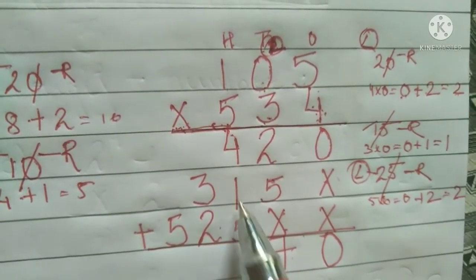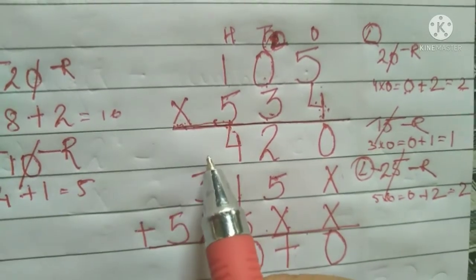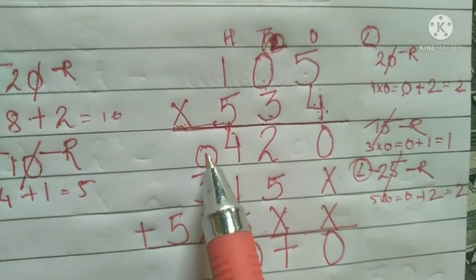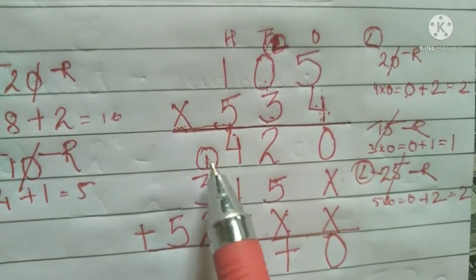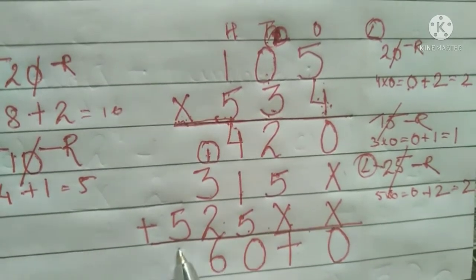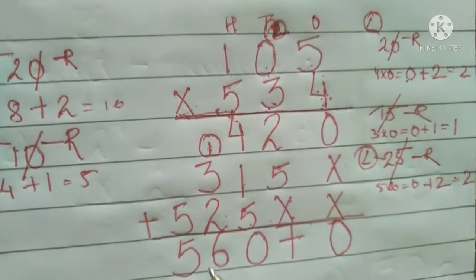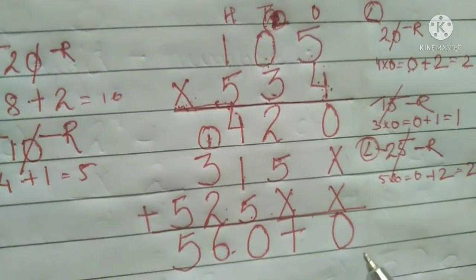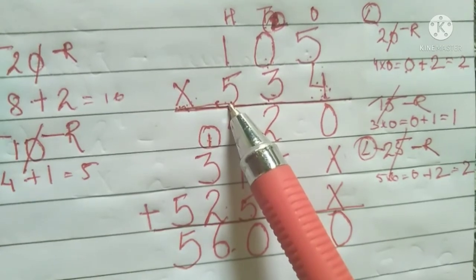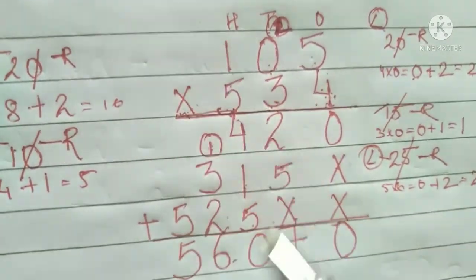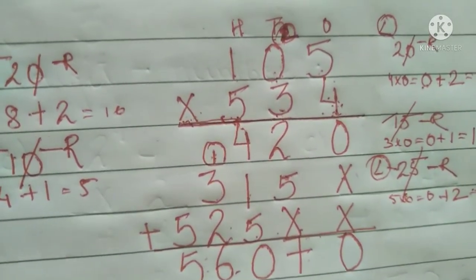Continuing the addition: four plus one is five, five plus one is six, six plus four is ten — write zero and carry one. Pass the one to the next number: three plus one equals four, four plus two is six, and then five. So when you multiply 105 by 534, you get 56,070. This is how you solve multiplication by one-digit, two-digit, and three-digit numbers. If it is a four-digit number, you start from the thousands place the same way. I hope you understood.